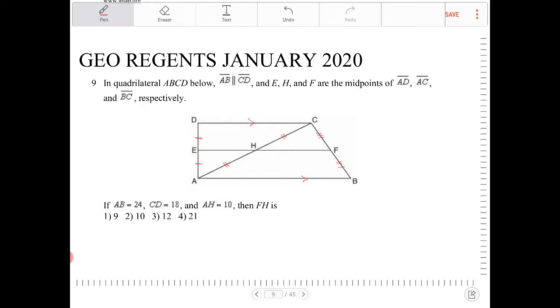AB is equal to 24, CD is equal to 18, and AH is equal to 10. So if I know that AH is equal to 10, I also know that HC, therefore, is equal to 10.